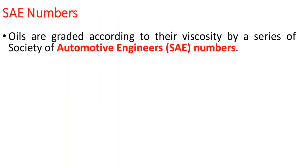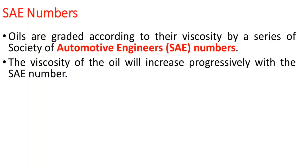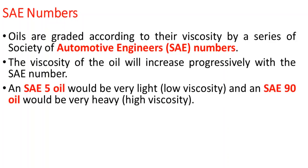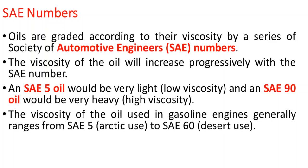Oils are graded according to viscosity by the Society of Automotive Engineers (SAE) number series. Viscosity increases progressively with SAE number — SAE 5 oil is very light with low viscosity, and SAE 90 oil is very heavy with high viscosity. The viscosity of oil used in gasoline engines generally ranges from SAE 5 for Arctic use to SAE 60 for desert use — Arctic meaning cold conditions and desert meaning hot conditions.